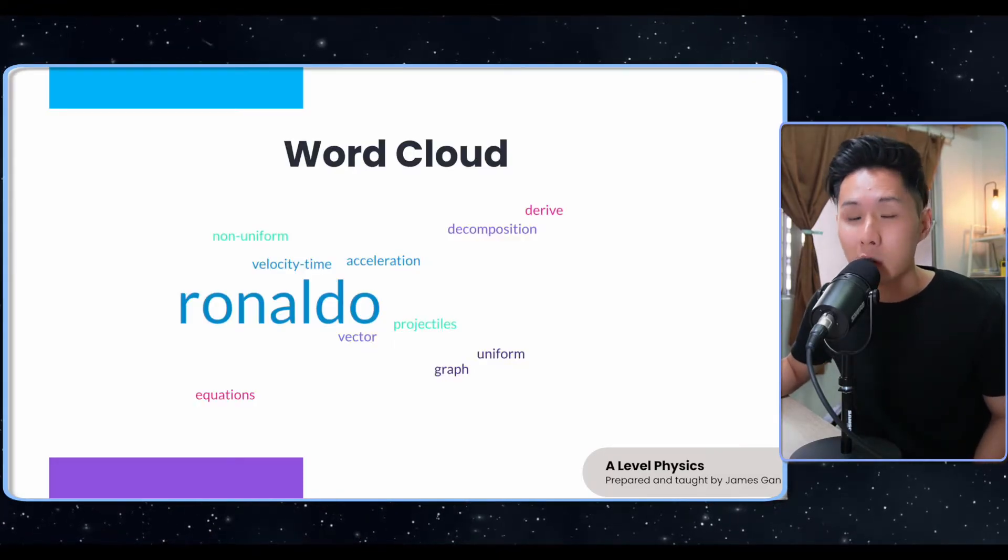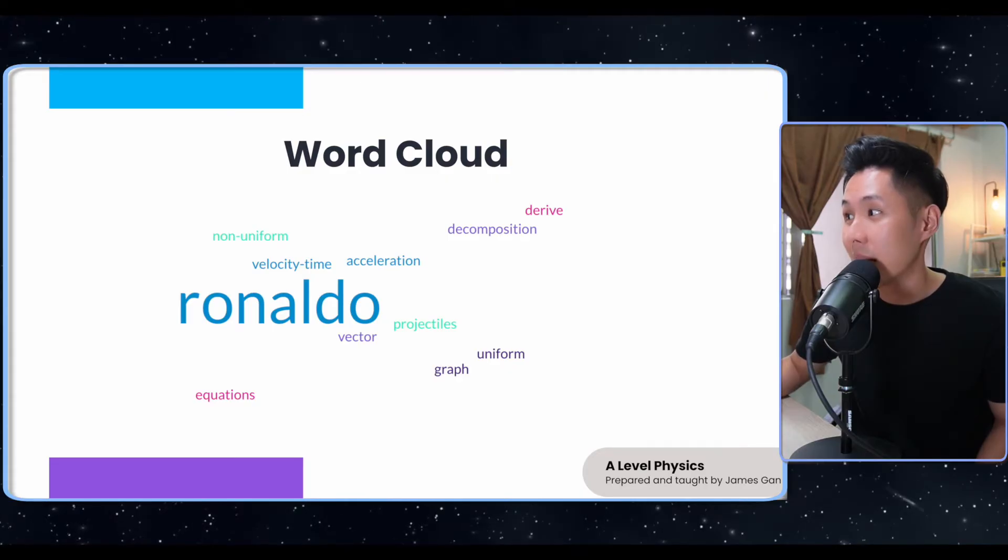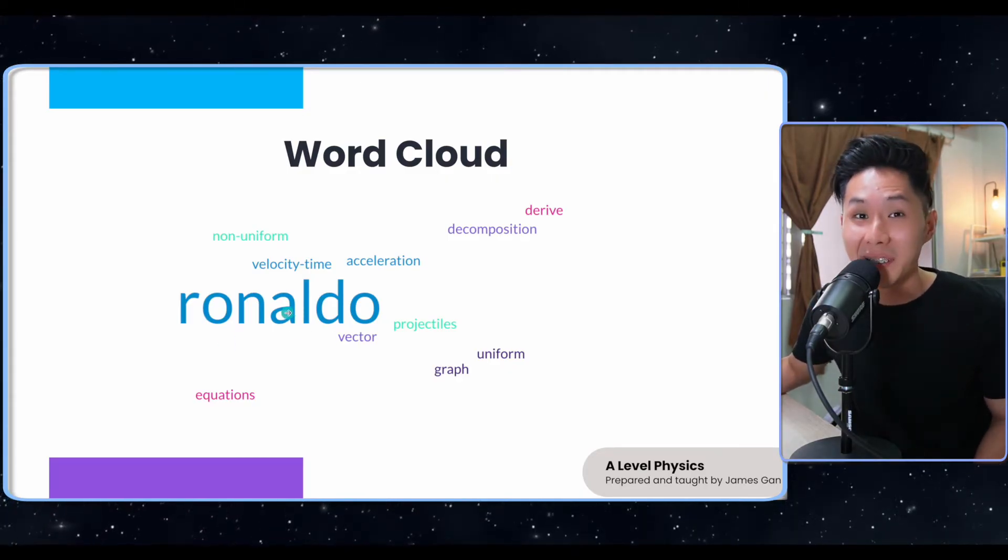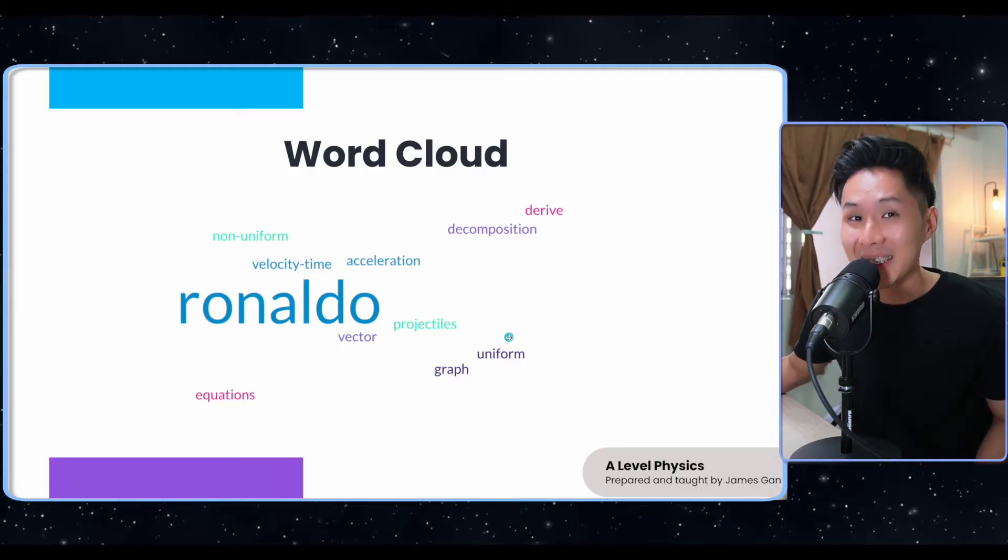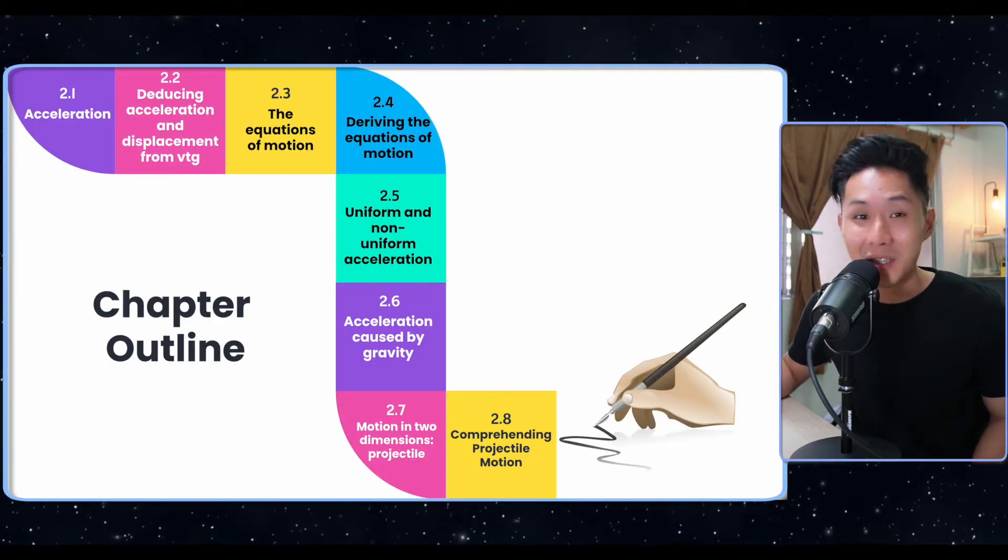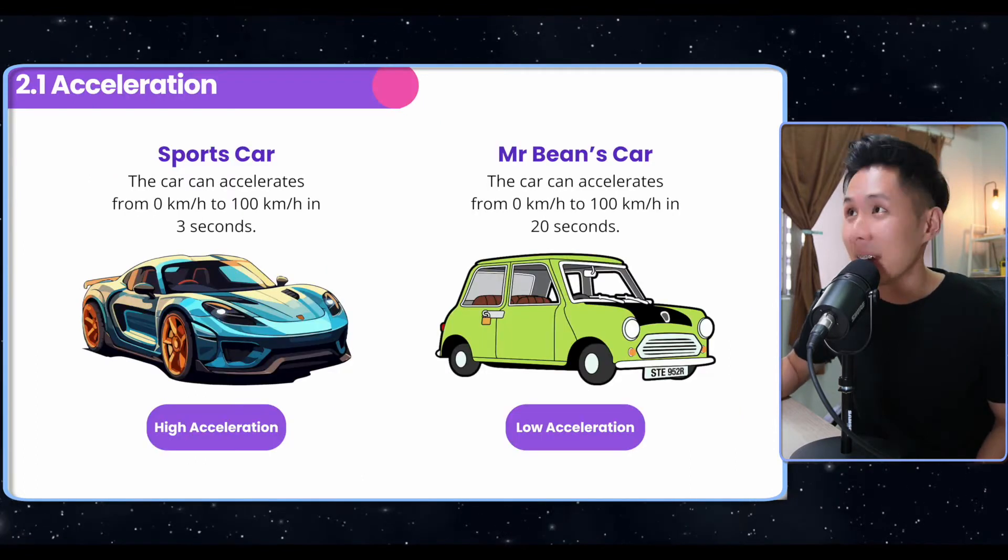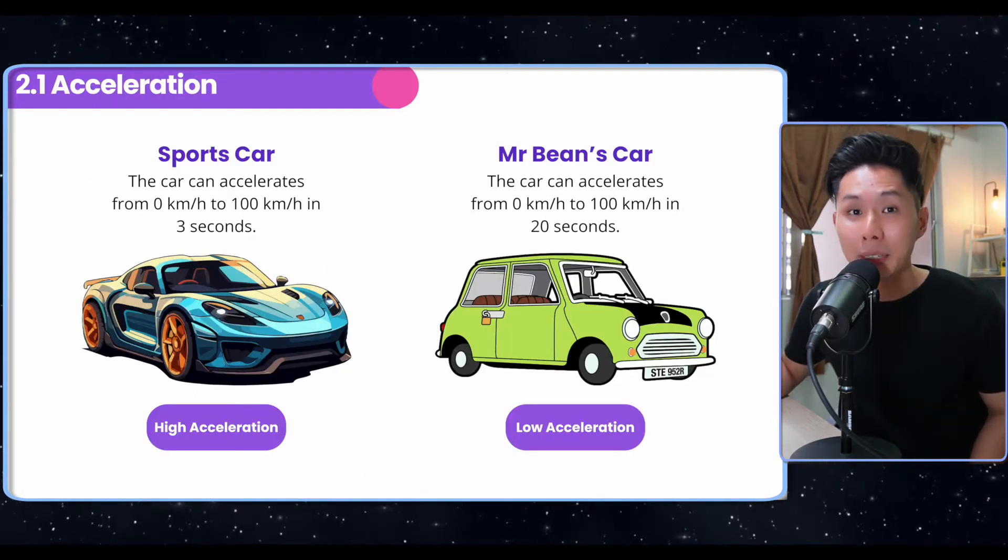Right, a word cloud for this chapter. You will see a lot of terms that you might not be familiar with, but do notice that Ronaldo is here. I will let you know what it means later, but with that, this is also the chapter outline. Feel free to skip over to the chapters that you're interested in. Now, let's look into the first sub-chapter, which is acceleration.